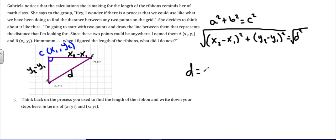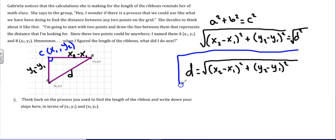So I have D equals the square root of (x₂ - x₁)² plus (y₂ - y₁)². And this is the distance formula.